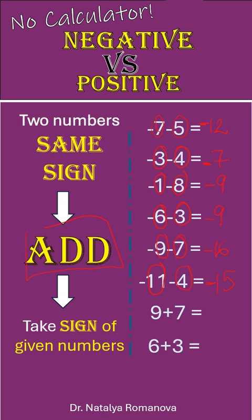9 plus 7, just 16. Both positive numbers, so the answer must be positive. 6 plus 3, it is 9.